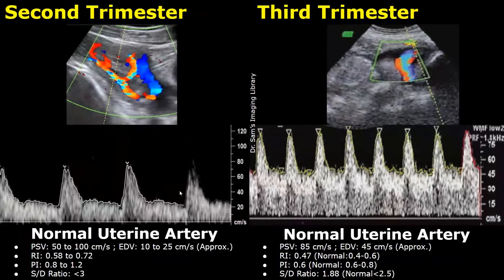These are normal spectral Doppler waveforms of the uterine artery in the second and third trimesters. During the second trimester, the uterine artery peak systolic velocity is usually between 50 to 100 centimeters per second, and the end diastolic velocity is usually between 10 to 25 centimeters per second. Keep in mind that these values are just approximate ranges — there may be some variations in some cases.